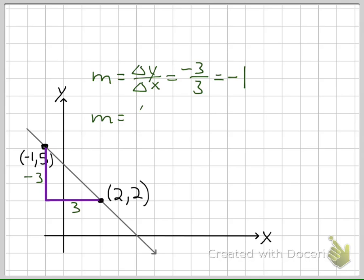Now we can go back to our slope formula and check to see if it matches. Let's do our negative 1, 5 as x1, y1.